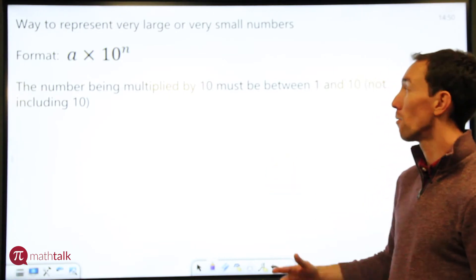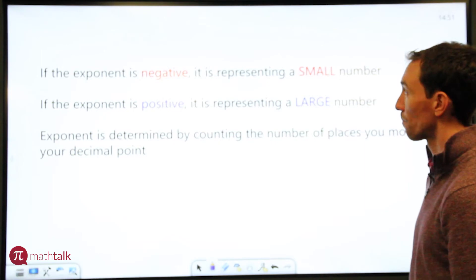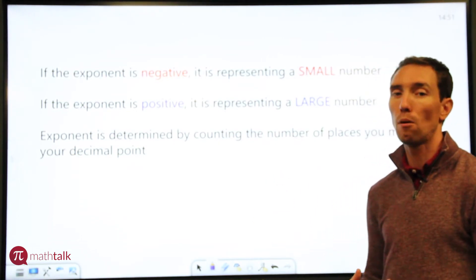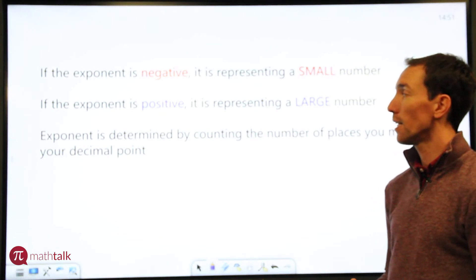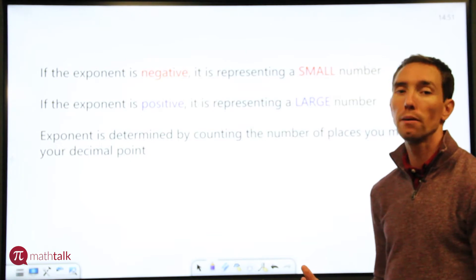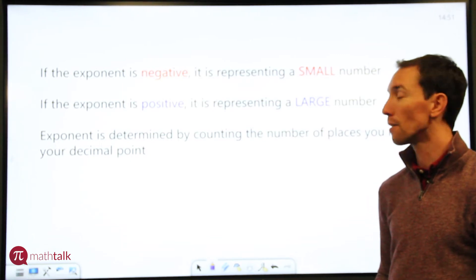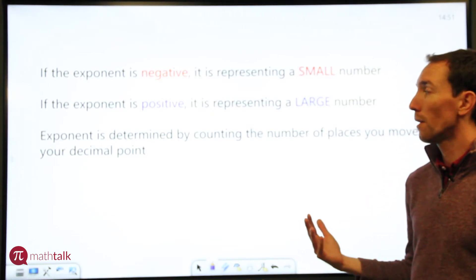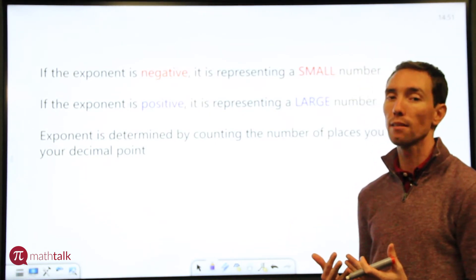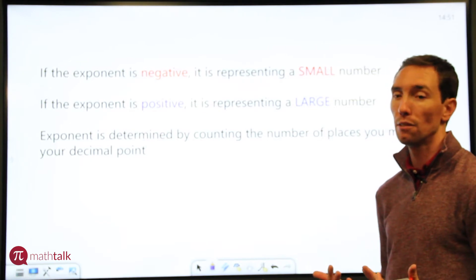And then as far as the exponent is concerned, there's a couple of rules. If your exponent is negative, you're dealing with a very small number, a small decimal. If your exponent is positive, you're dealing with a very large number. Maybe the millions, the billions, the trillions or even bigger. And then your exponent, the way you figure out what number to use, is you count the number of spots you're moving your decimal point. And that's going to be the exponent you use.